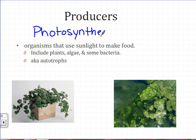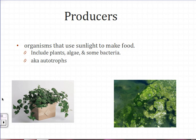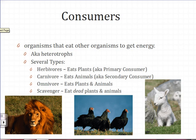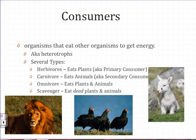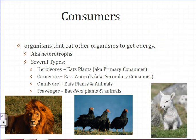We will talk more about photosynthesis as we get into our cell unit later. Consumers are organisms that eat other organisms to get energy. They're also called heterotrophs. There are several kinds. We have herbivores, which eat plants, like this baby goat here. They are also called primary consumers.